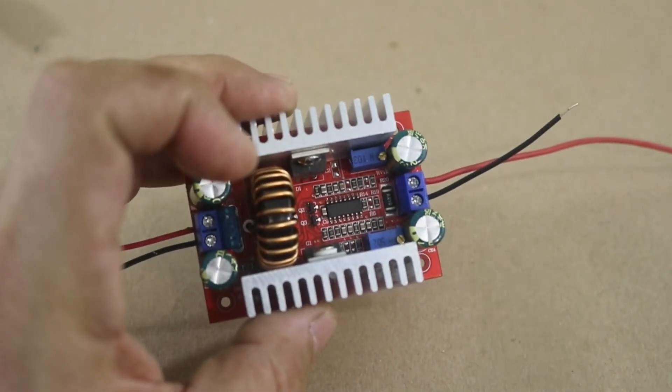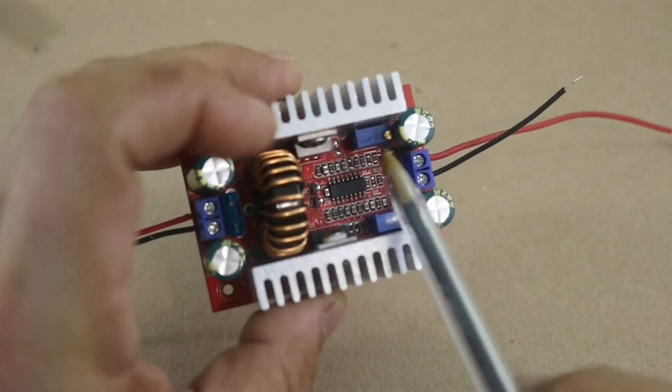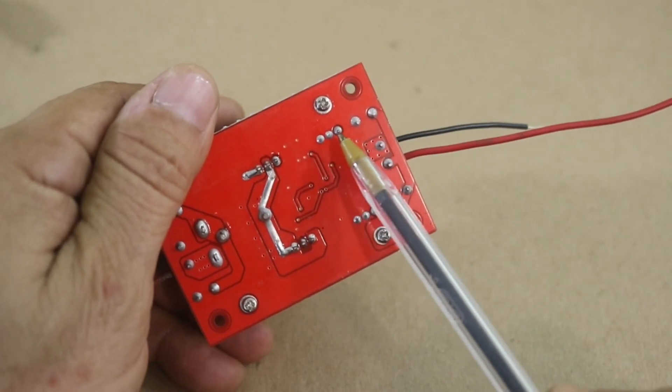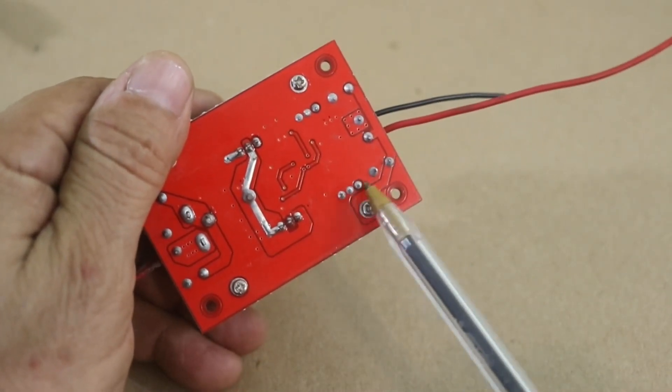So, let's remove the two trimpots, the voltage trimpot and the current trimpot. It is these three points here, and this other three.